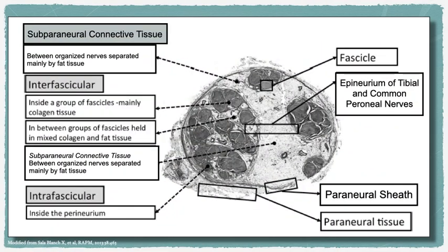Both tibial and common peroneal nerves are separate and distinct within the sciatic sheath throughout the entire course. As such, we must adopt new nomenclature for the sciatic nerve. Both tibial and common peroneal nerves are covered by their own epineurium. Since they lie within the sciatic sheath, we must term the sciatic sheath a perineural sheath, with perineural connective tissue separating the nerves. This subperineural connective tissue is mainly fat tissue; however, some vessels and small branches of nerves exist.